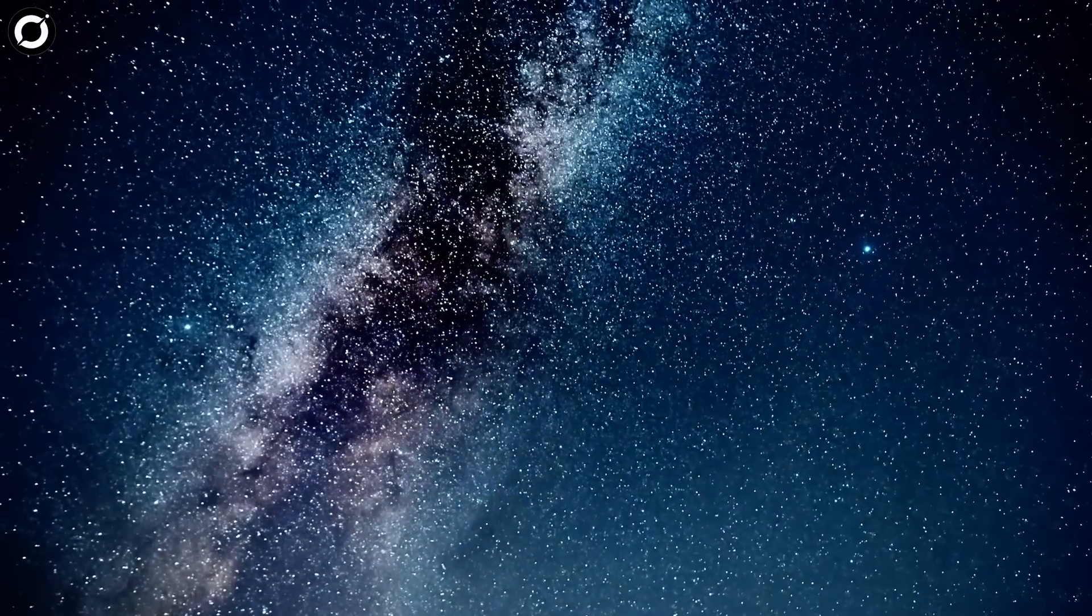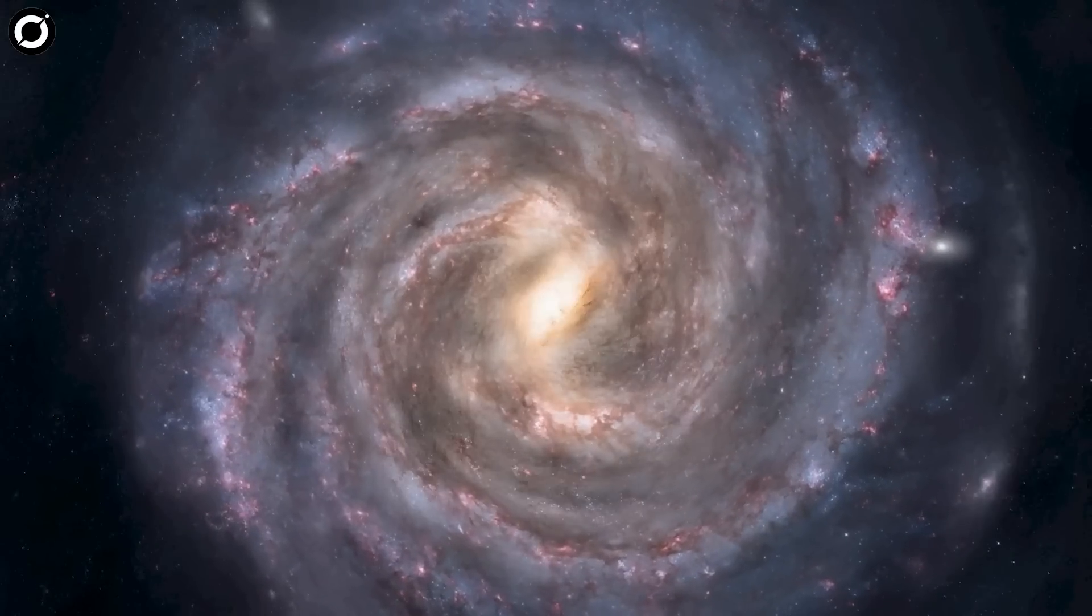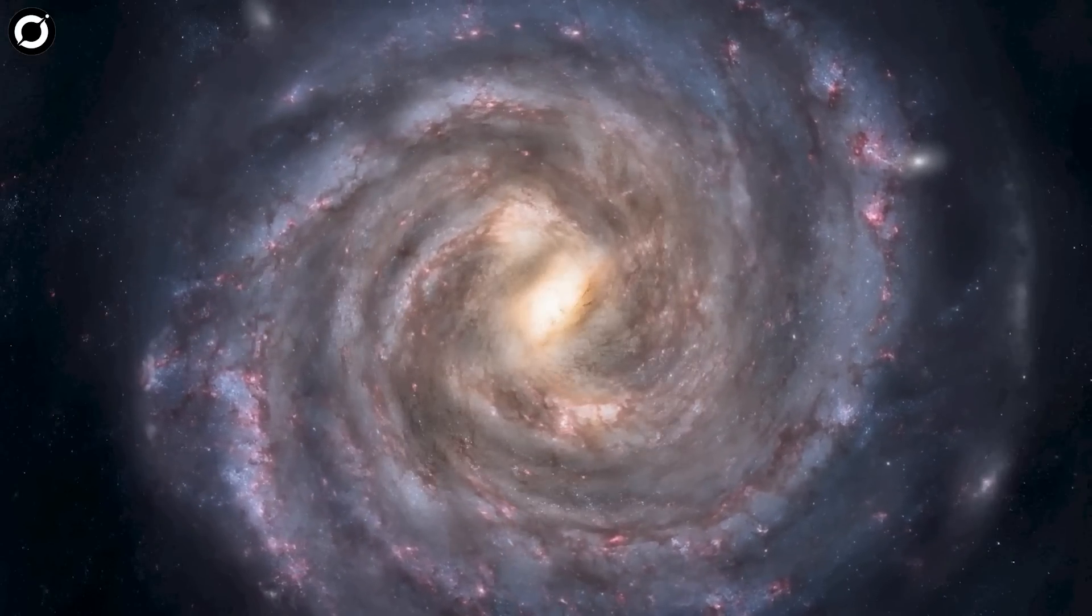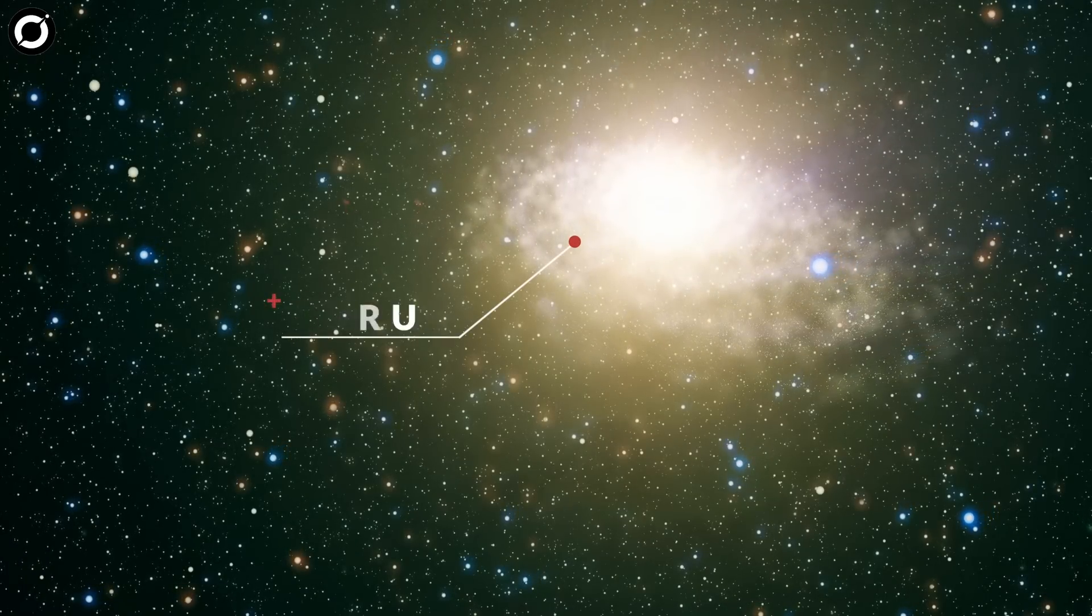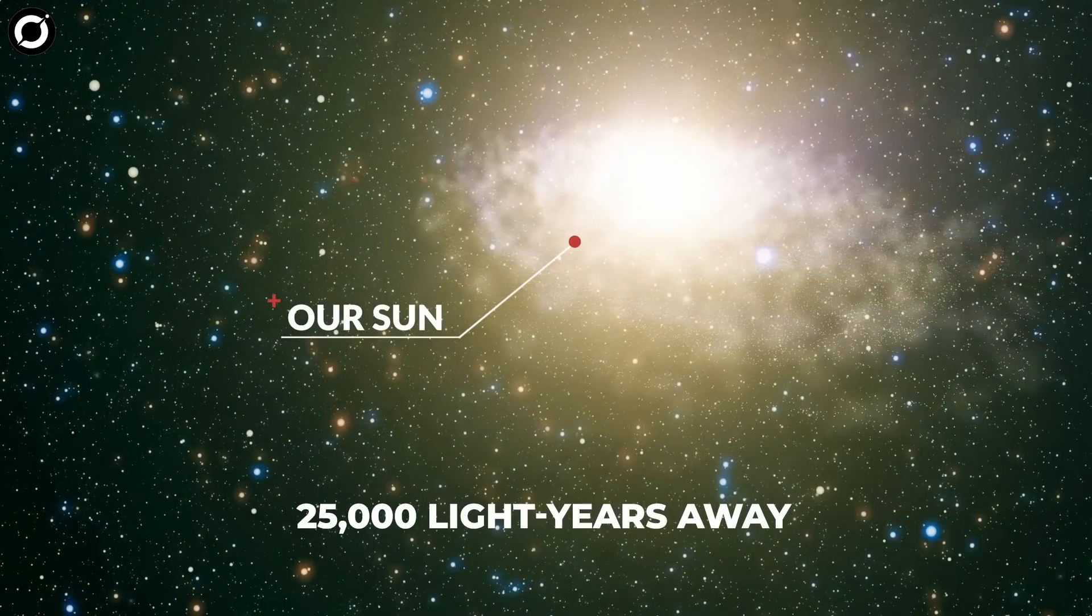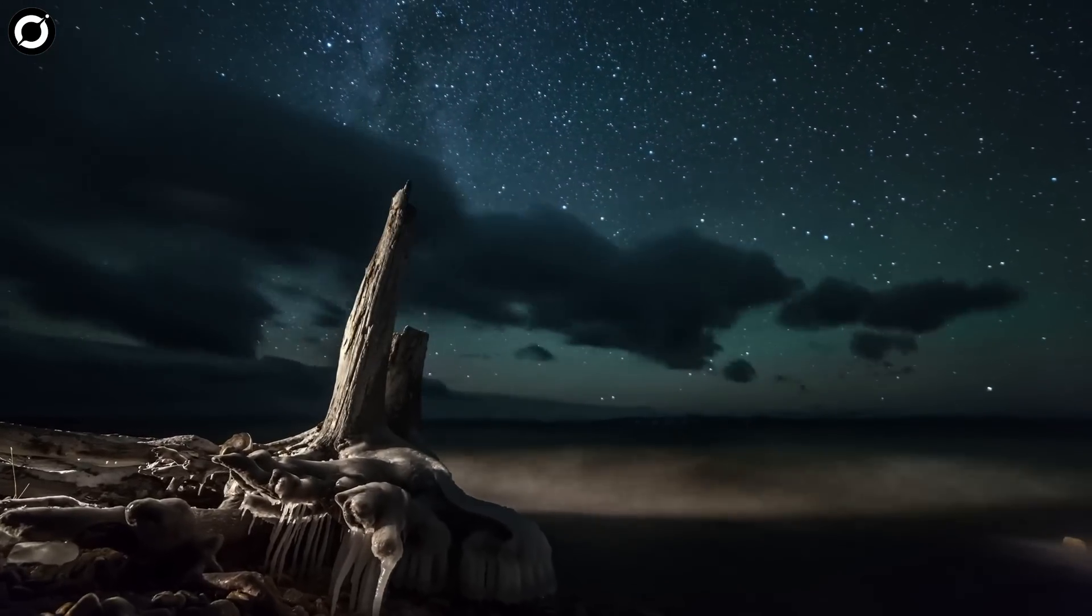The Milky Way galaxy is a huge collection of stars. If you could view the galaxy from the top or bottom, it would look like a spinning pinwheel. Our sun is located on one of the spiral arms, about 25,000 light years away from the center of the galaxy.